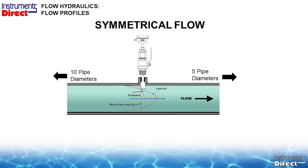In addition, most flow meters require a certain amount of straight run of pipe for optimum performance. It's typical to have 10 pipe diameters of straight run after an elbow before installing a flow meter, and 5 pipe diameters before the next obstruction. This is based upon flow rates around 10 feet per second. For higher velocities, you may need more straight run; for lower velocities, less.